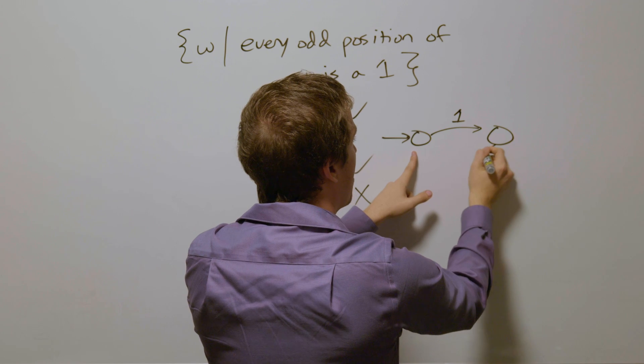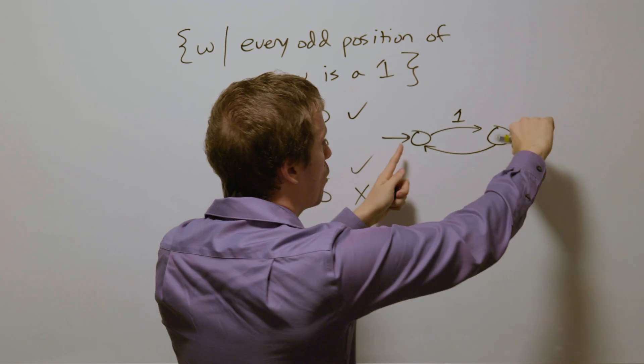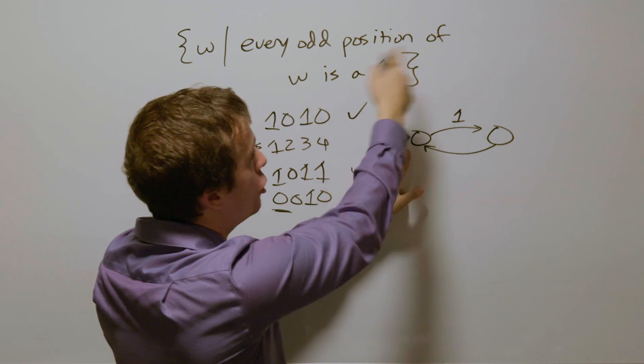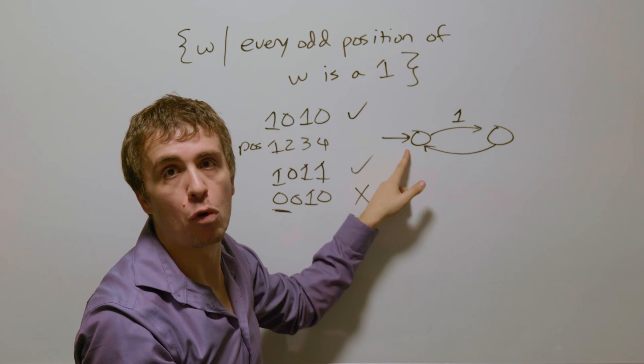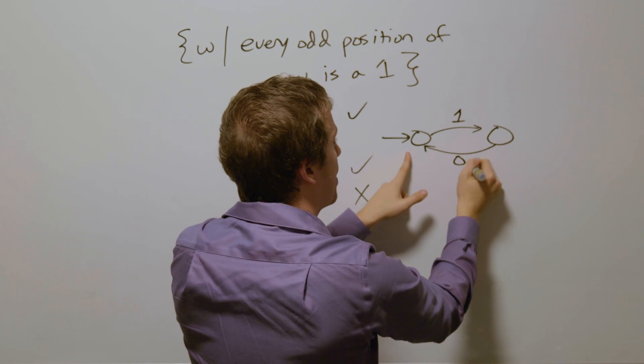But then if we come back, which means that we're reading the even position character, there's no stipulation on that, and so therefore it can be anything. So that can be a zero or a one.